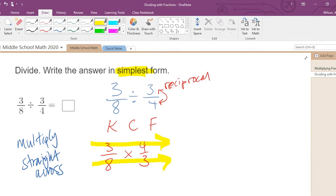But before we do that, I'm going to cross reduce. The eight and the four are both divisible by four because they have a common factor of four. So that eight turns into a two, and the four turns into a one.